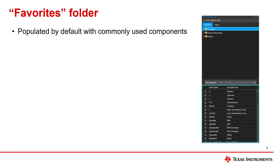The first thing in the PSPICE parts search directory is the Favorites folder. By default, it is populated with commonly used components. How to add additional components to the Favorites folder will be shown later.